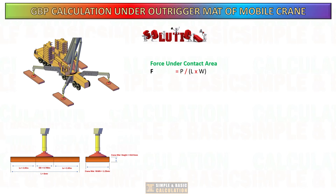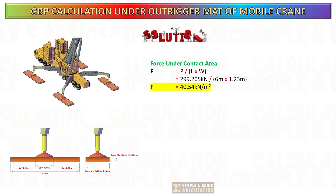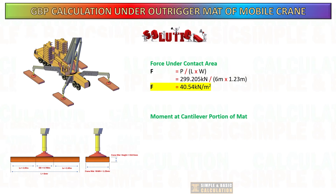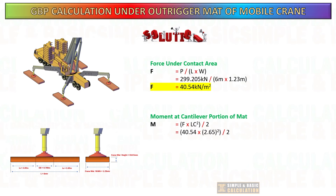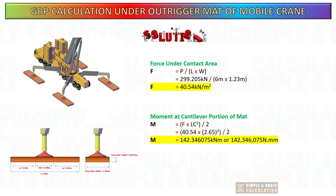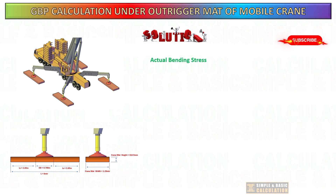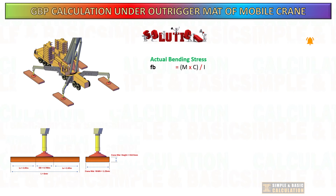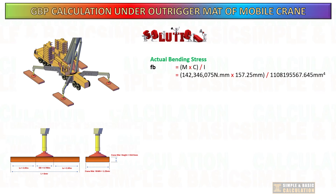First, calculate the force under the contact area: maximum outrigger force divided by the area of the mat. Next, calculate the moment at the cantilever portion of the mat. Then calculate the actual bending stress: moment multiplied by the centroid of the crane mat, divided by the moment of inertia. Note that the centroid is half of the height of the crane mat.